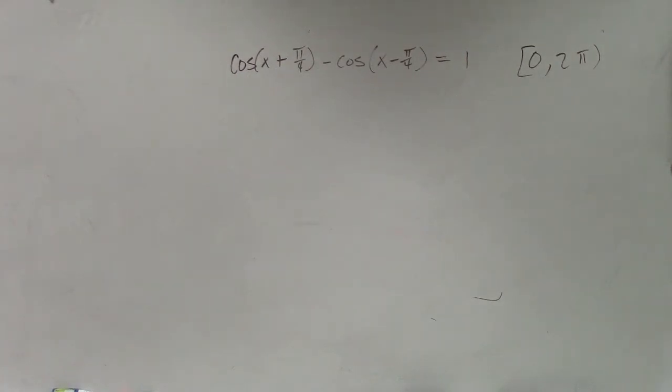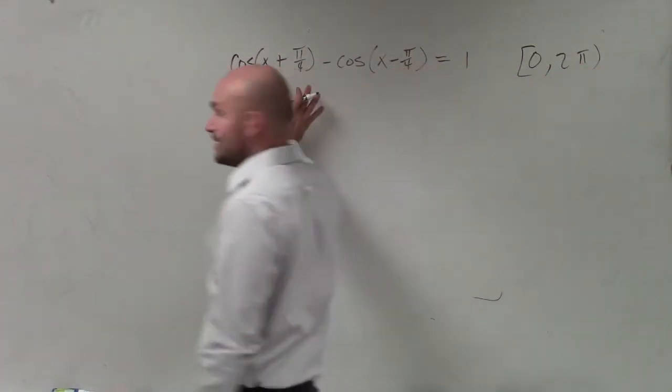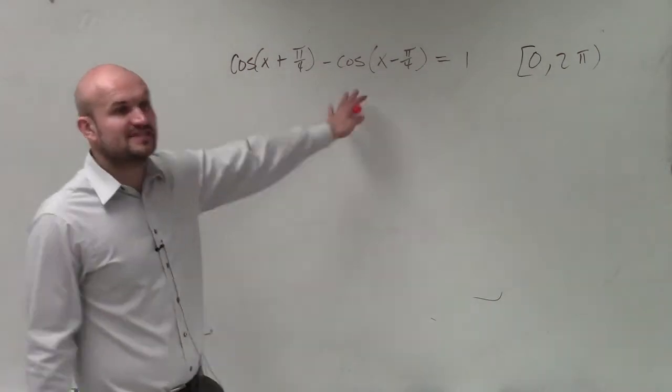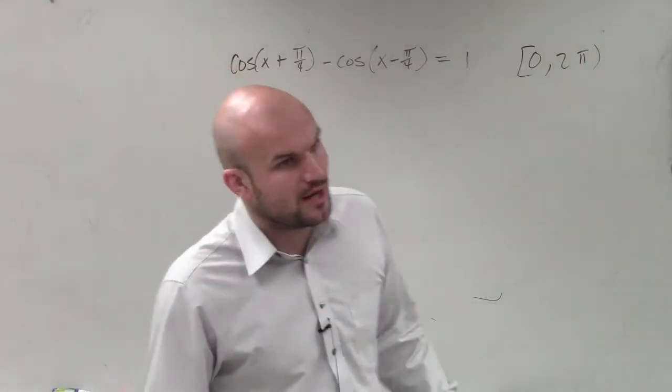For this problem, we see that we have the sum of two angles for cosine and we have the difference of two angles for cosine as well.